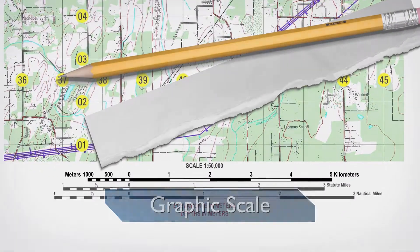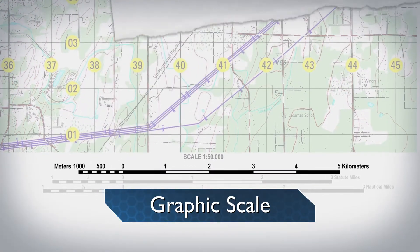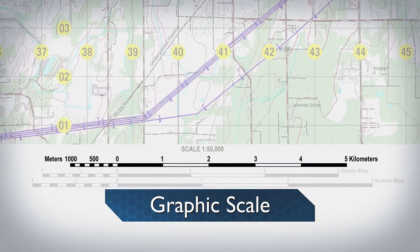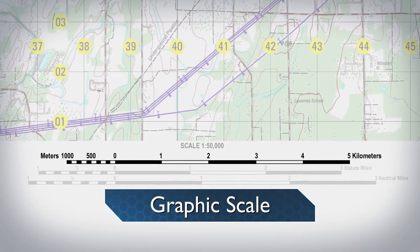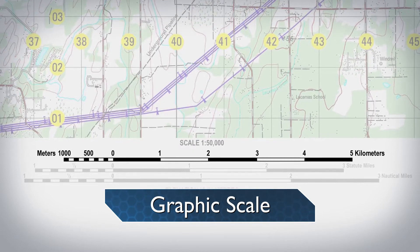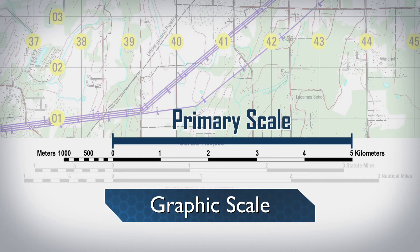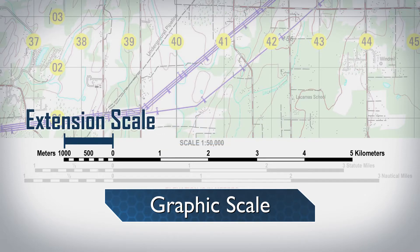The graphic scale is a ruler printed on the map and is used to convert distances on the map to actual ground distances. The graphic scale is divided into two parts. To the right of the zero, the scale is marked in full units of measure and is called the primary scale. To the left of the zero, the scale is divided into tenths and is called the extension scale.